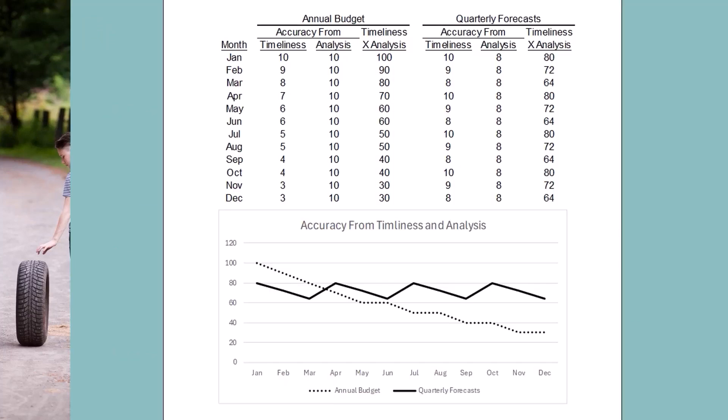Imagine scoring budgets and forecasts for their accuracy based on analytical detail and the accuracy from timeliness. In this table, each type of accuracy is graded on a scale of 1 to 10. Total accuracy could be calculated as the product of those two sources of accuracy. The table shows that budgets have very high analytical accuracy, while forecasts have 80% of that accuracy — a nod to the Pareto principle. Timeliness accuracy for budgets starts at 10, but drops by 1 each month until the 5th month.